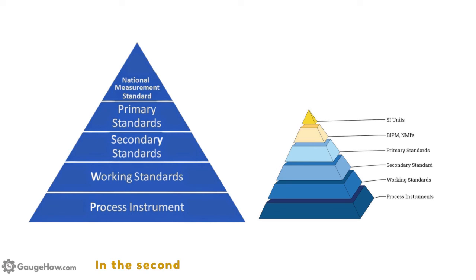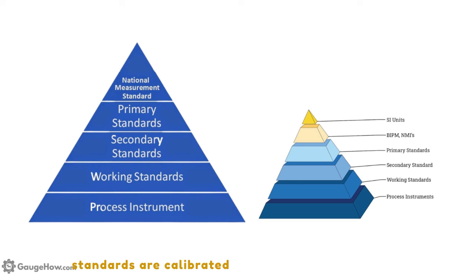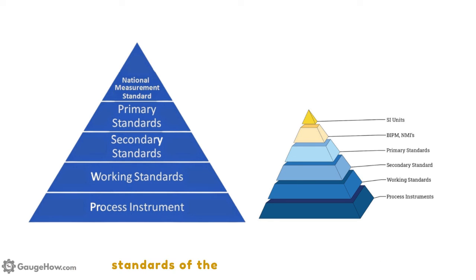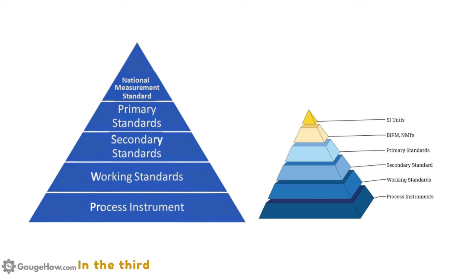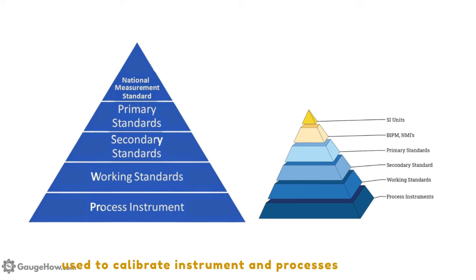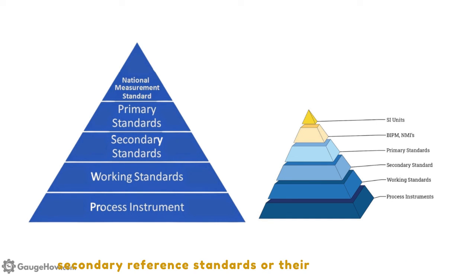The secondary reference standards are calibrated by comparing with primary standards of the same quantity using a high precision comparator and making appropriate corrections. In the third level, working standards are routinely used to calibrate instruments and processes against the secondary reference standards or their representatives.